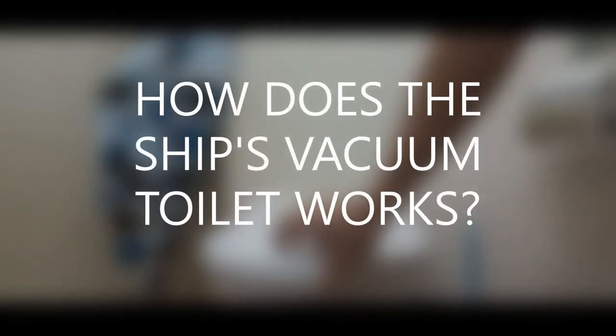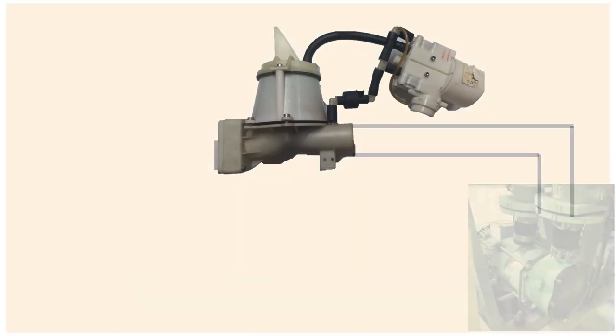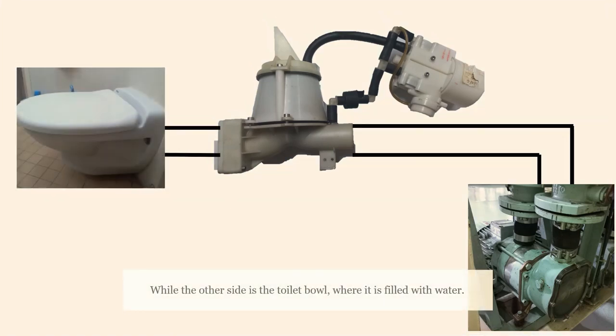How does the ship's vacuum toilet work? Here is our FD valve with BPC-V controller. It's composed of two sides: one side is the vacuum side connected to the vacuum pump, and the other side is the atmospheric side of the toilet bowl which is filled with water.